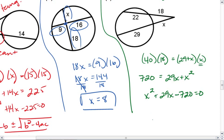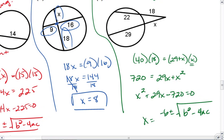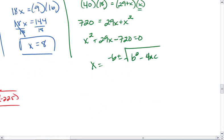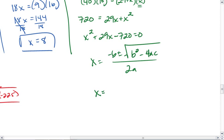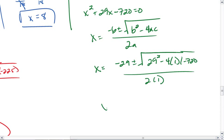I want to use my quadratic equation where I get x equals negative b plus or minus square root of b squared minus 4ac all over 2a. x equals negative 29 plus or minus the square root of 29 squared minus 4 times 1 times negative 720 all over 2 times 1. This gives me negative 29 plus or minus, 29 squared is going to be 841 plus 4 times 720 is 2880.